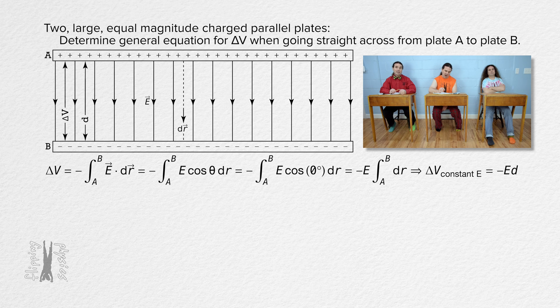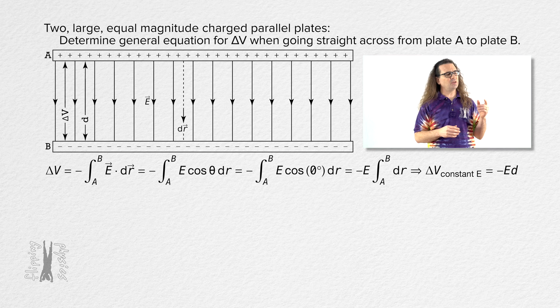That means the equation for the electric potential difference in the direction of a uniform electric field equals the negative of the electric field times the linear distance between the two points. Thank you Billy.